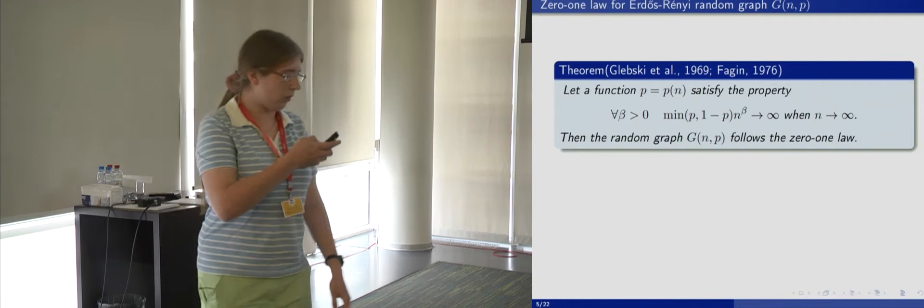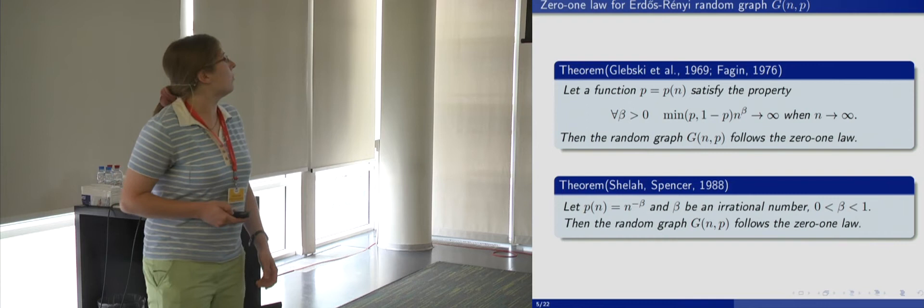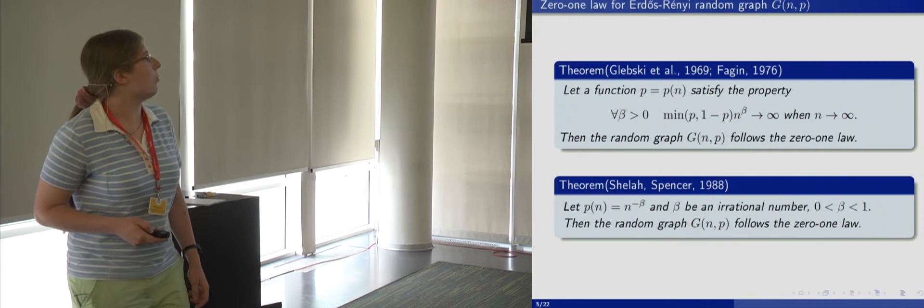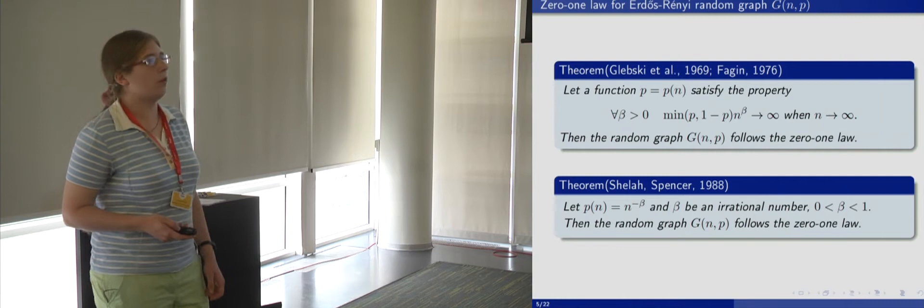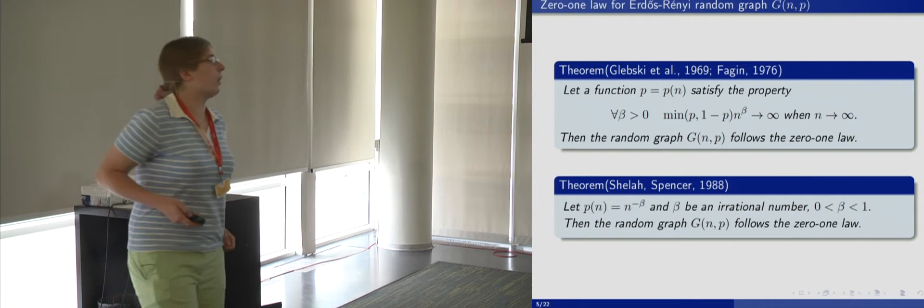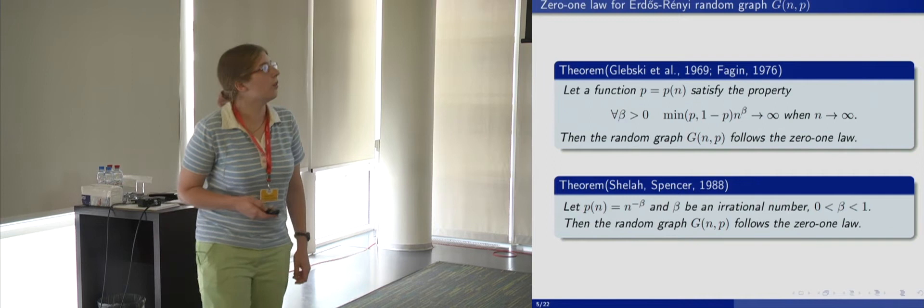And later Shelah and Spencer proved the following result. If P(N) is equal to N to the power minus beta, and beta is an irrational number from the interval (0,1), then the random graph also follows the 0,1 law.